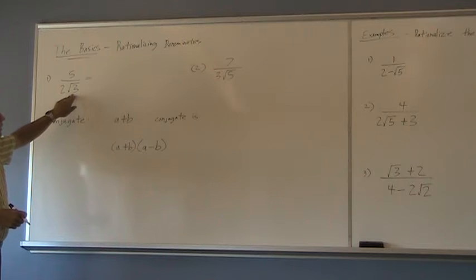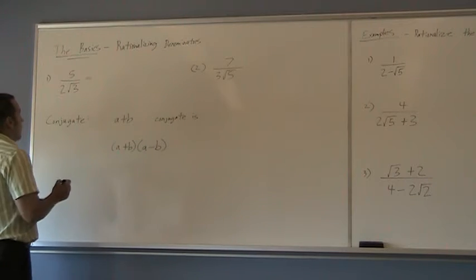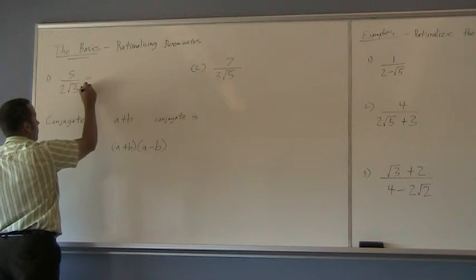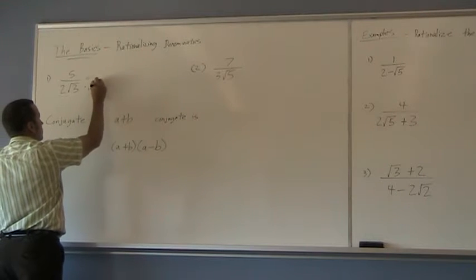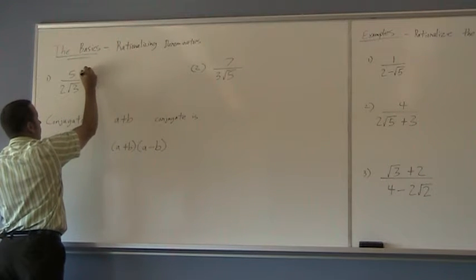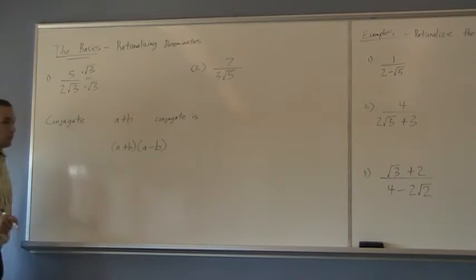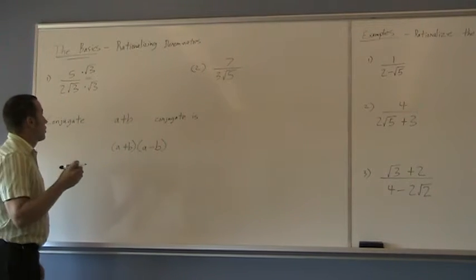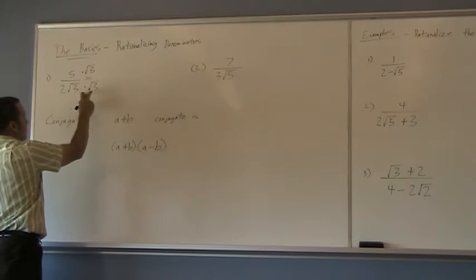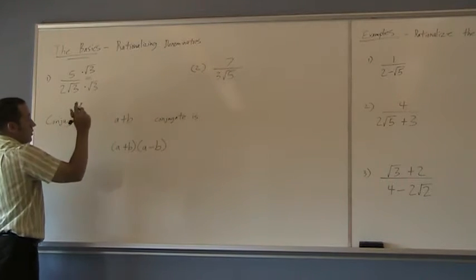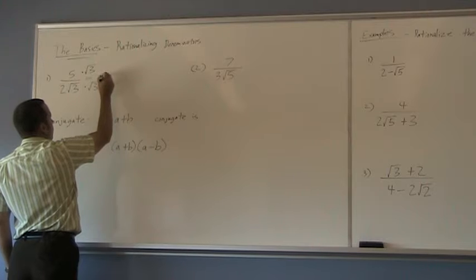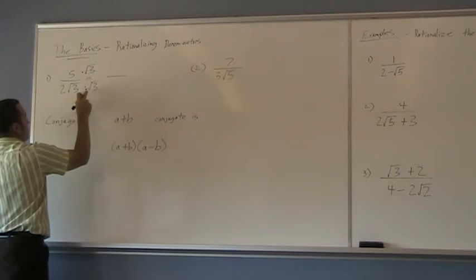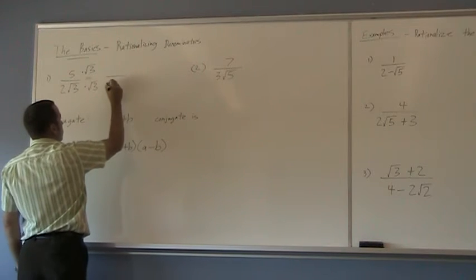So, in order to get rid of that, I can simply multiply both the top and the bottom by √3. And you'll remember from your rules, multiplying irrationals, the numbers on the outside and the inside both go together. So, I'll end up with 2 times 1 out front leaves me with 2.